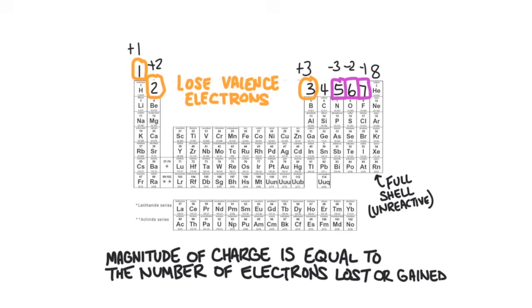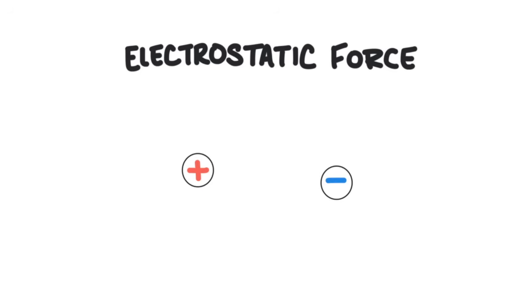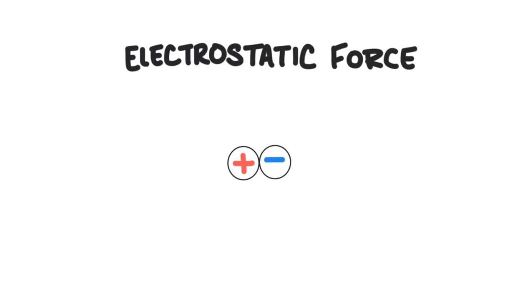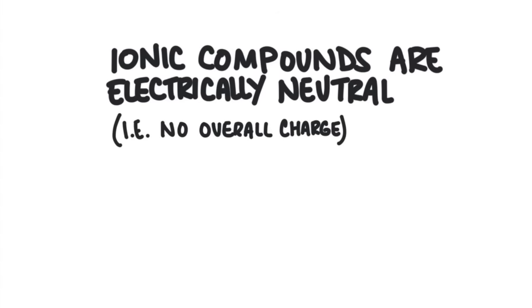When a positive ion meets a negative ion, they stick together because opposite charges attract. The attraction is called electrostatic force. An ionic compound is composed of negatively charged and positively charged particles sticking together. Although the individual particles have charges, the ionic compound is electrically neutral — that is, the compound does not have an overall charge. The reason is because the total number of positive charges will cancel the total number of negative charges.